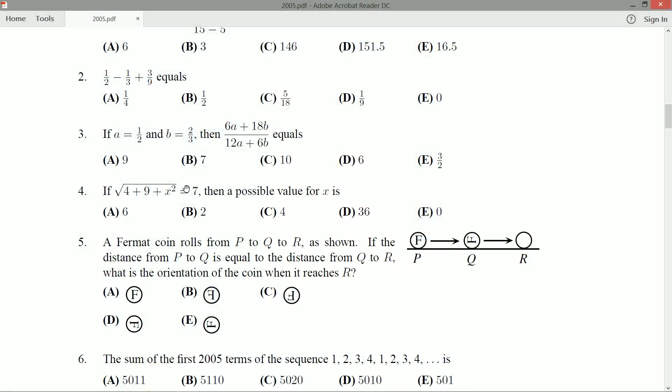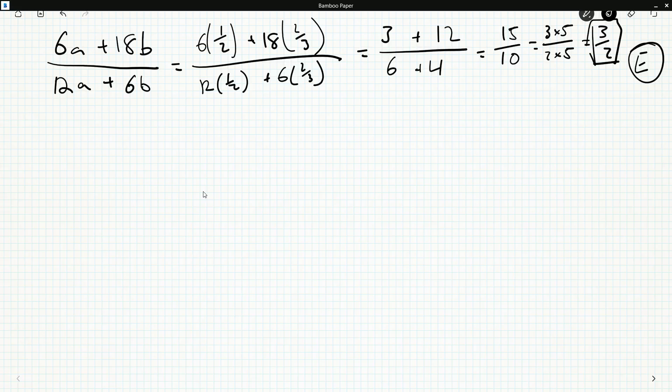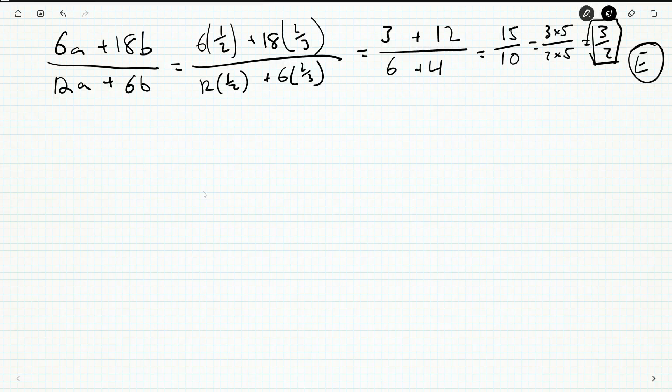Now, they give us four values. You could take each one in turn and plug them in and see, does it actually equal seven? Does the left-hand side evaluate to seven? But I think the easiest thing to do is write down this equation and manipulate it so that we get a statement that says x equals. Get the question to solve itself.